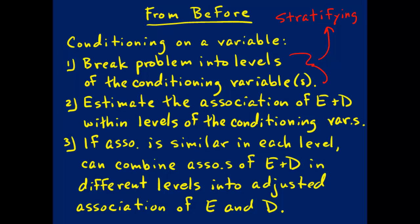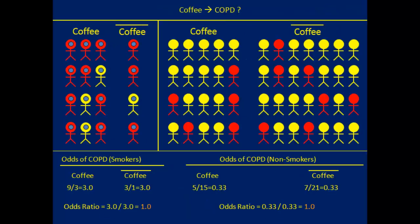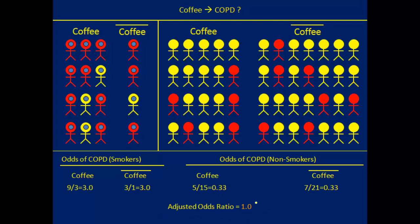The final step was that if the association was similar in each level, we could combine the associations of exposure and disease in the different levels of the conditioning variable and create an adjusted association of exposure and disease. Here we had exactly the same associations in these two levels, so we combined them into an adjusted association — which, because they were the same in both levels, came out to be the same number. This is the adjusted odds ratio: the association between coffee drinking and COPD adjusted for smoking.